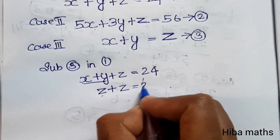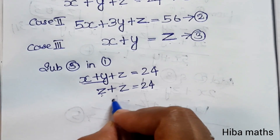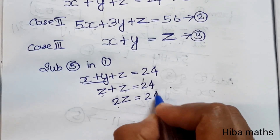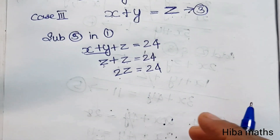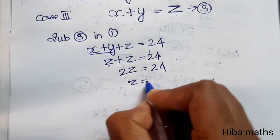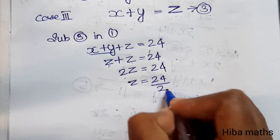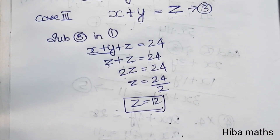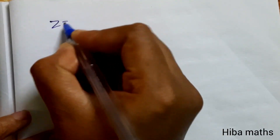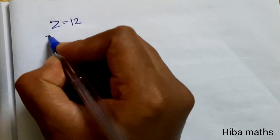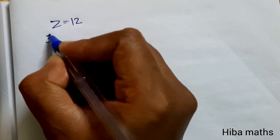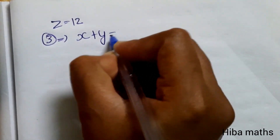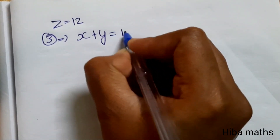Substituting z for x plus y: z plus z equals 24, so 2z equals 24, giving z equals 24 divided by 2, which equals 12. So z equals 12. From equation 3, x plus y equals z, therefore x plus y equals 12.